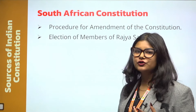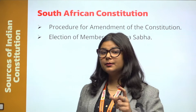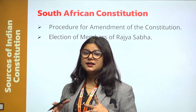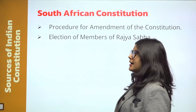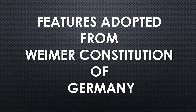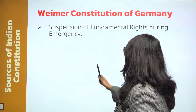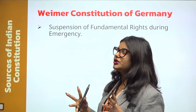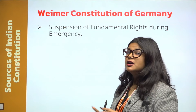Next is the South African Constitution. The features adopted from the South African Constitution are: the procedure for amendment of the Constitution. We know that there are amendments in our Constitution — that feature of the amendment procedure comes from the South African Constitution. Next is the election of members of Rajya Sabha, which is also adopted from the South African Constitution.